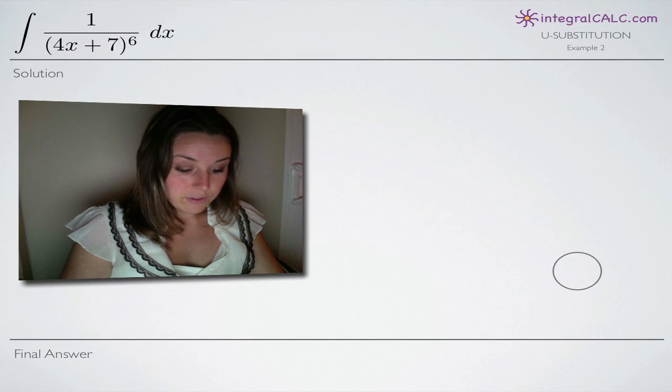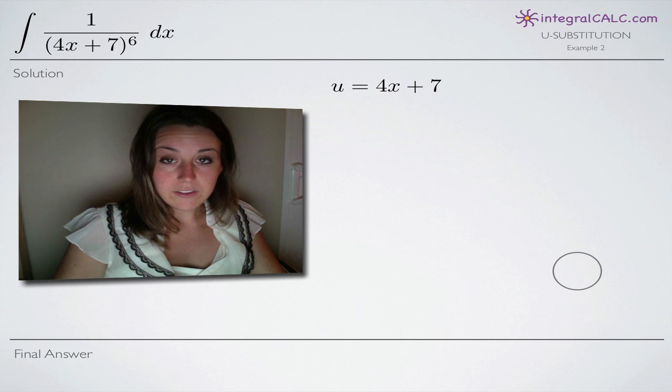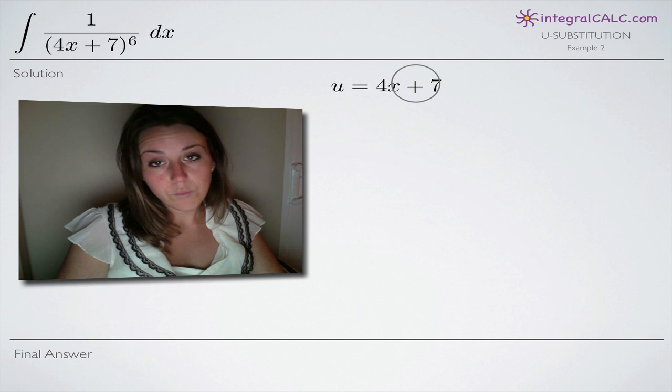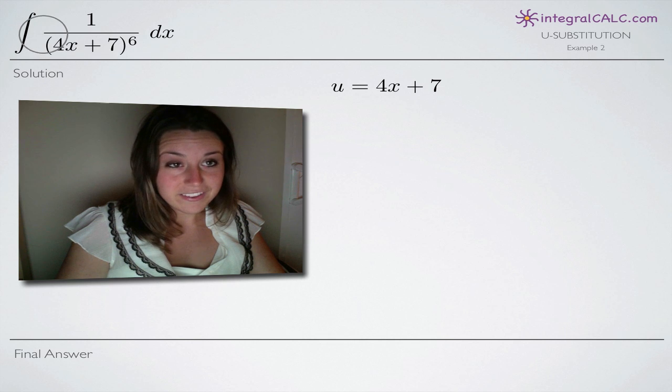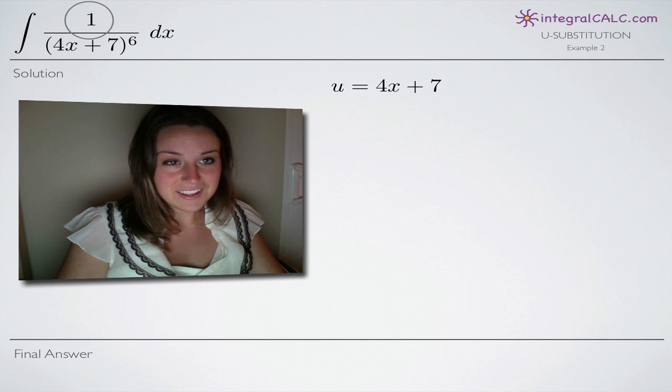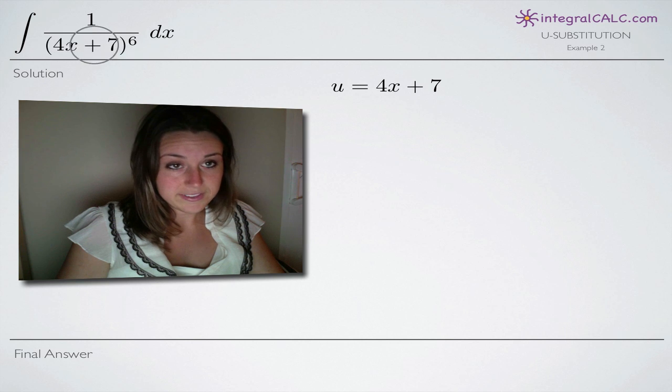As with any u-substitution problem, the first thing we need to do is identify what we'll be assigning u to. In this case, it's pretty obvious we're not going to assign it to 1 because that's too simple. There's really only one candidate here and that's 4x plus 7. So we're going to assign u to 4x plus 7.